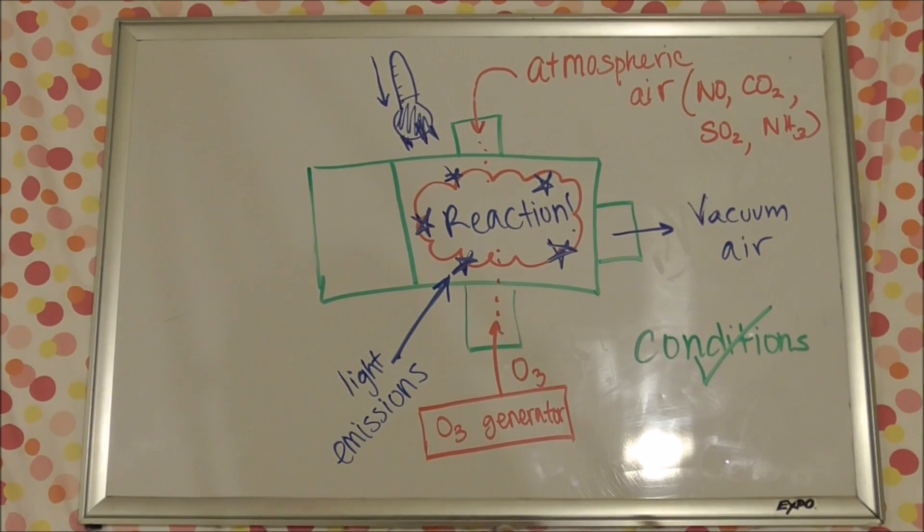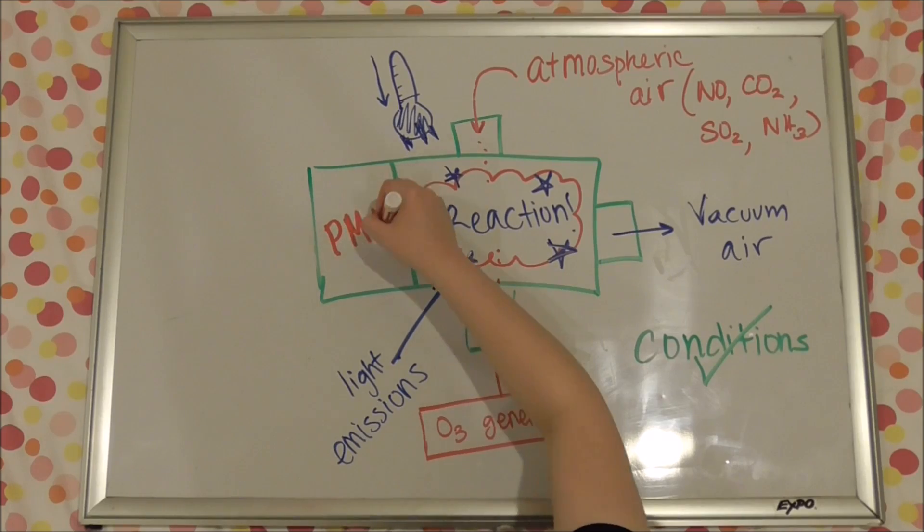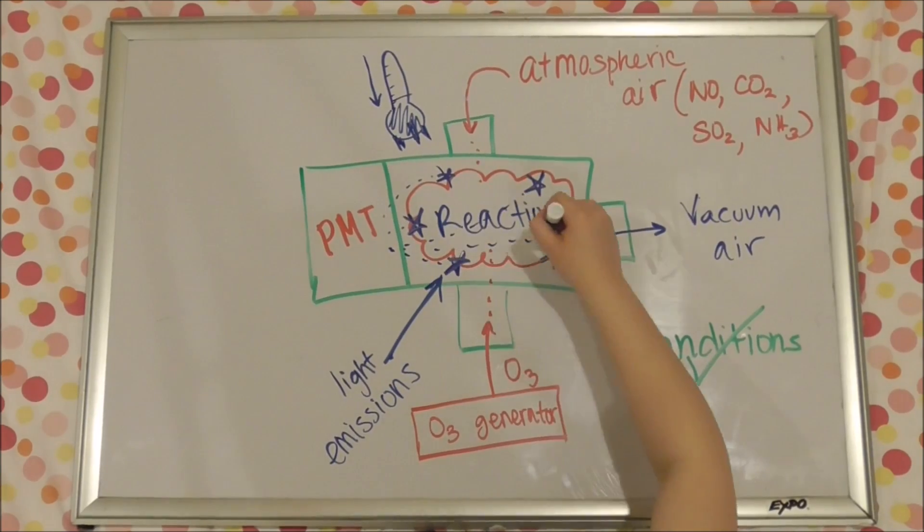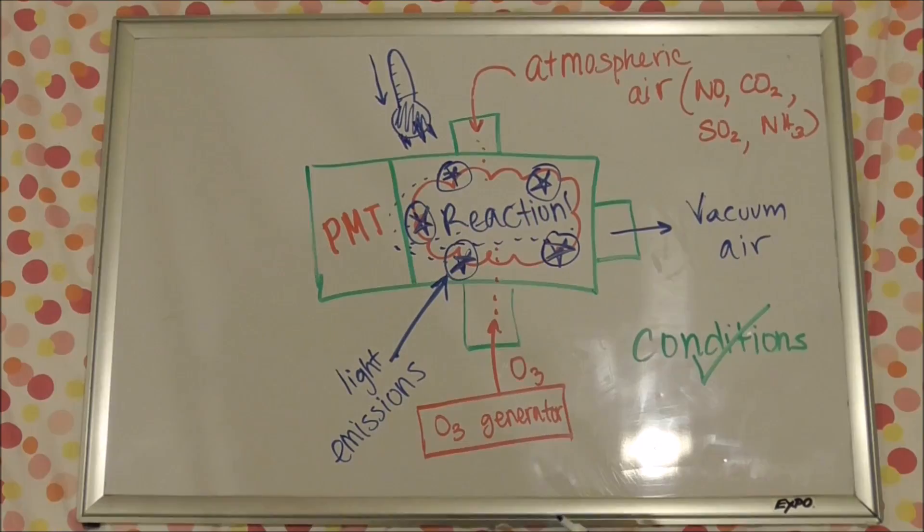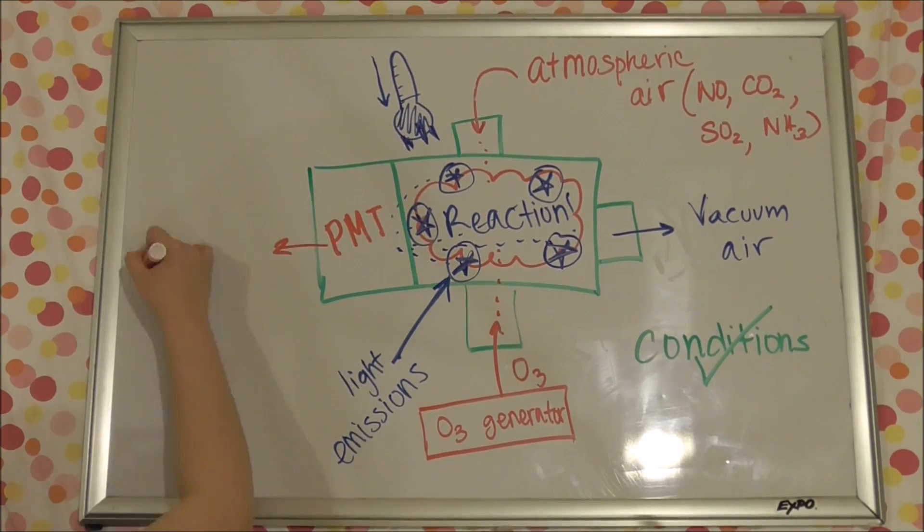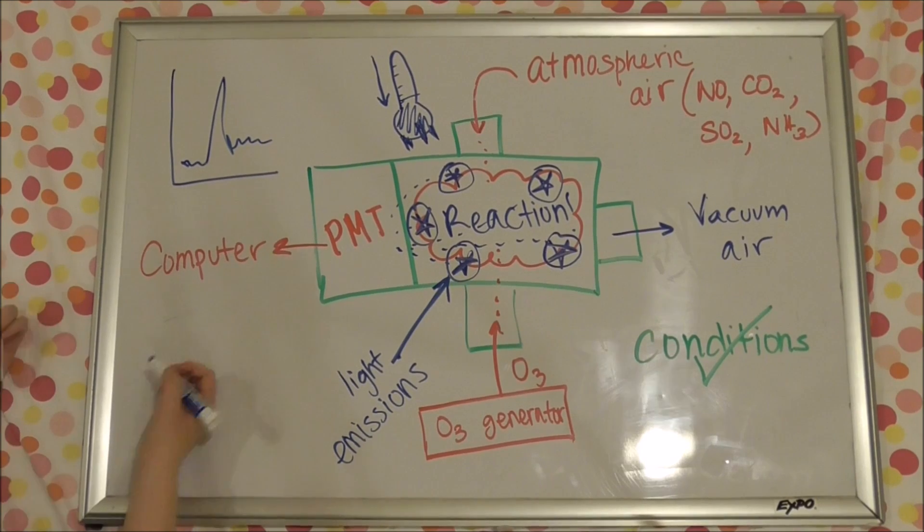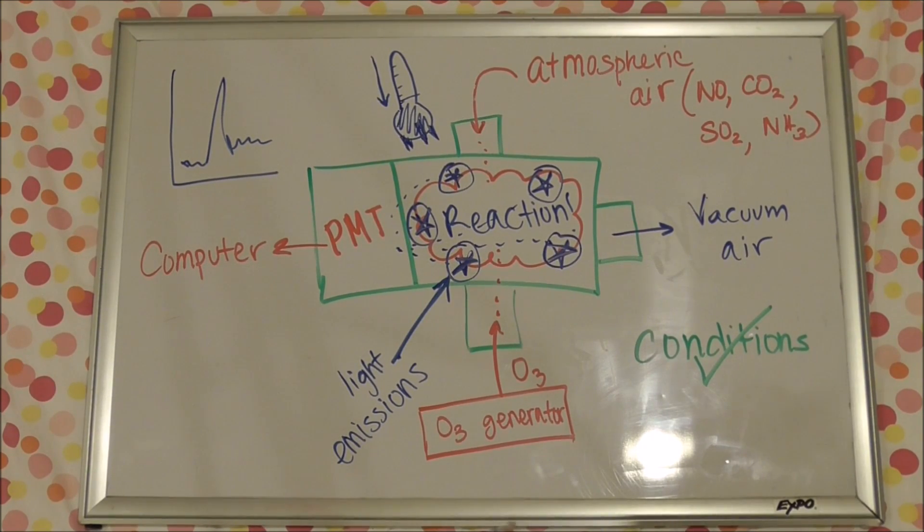Attached to the reaction chamber is something called a PMT, or photomultiplier tube. The PMT basically detects the light created by the reaction and feeds it into the computer system, which will create a graph that will show you the concentration of the NOx based on a relationship or equation previously inputted.